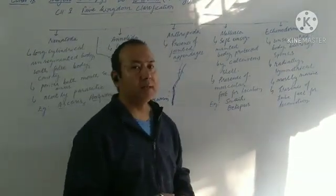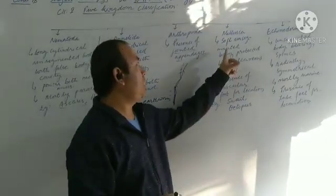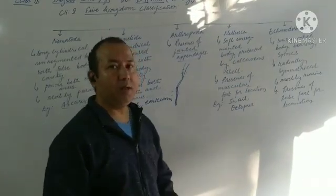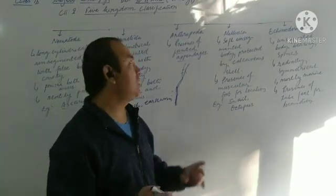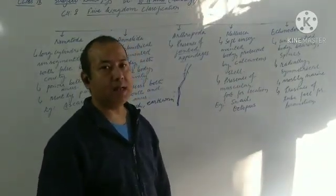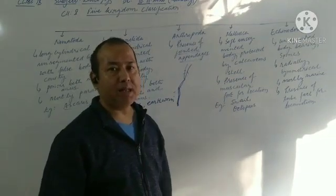So after Arthropoda comes Mollusca. Mollusca. Let us talk about the body. Their body usually is unsegmented. And the body, the most identifying characteristics of mollusca is that, their body is protected by calcareous shells. That is, the shell made up of calcium.